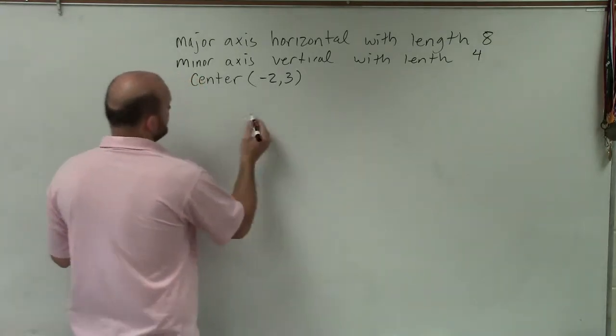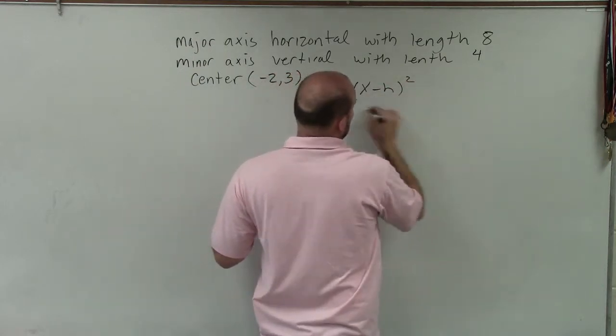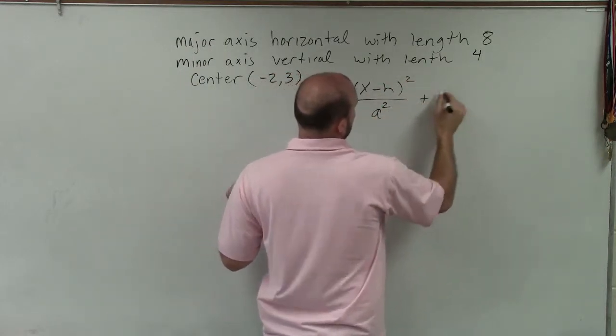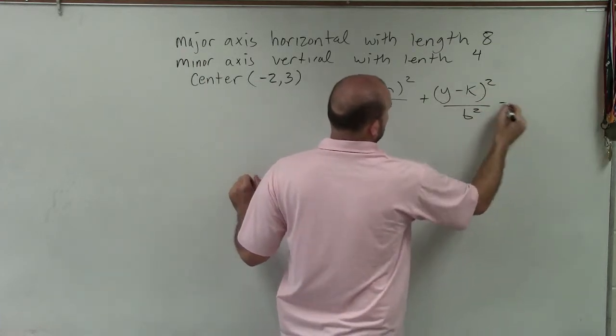So therefore, the standard equation that we're going to write our equation in is x minus h squared all over a squared plus y minus k squared all over b squared equals 1.